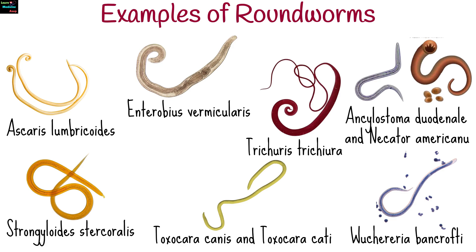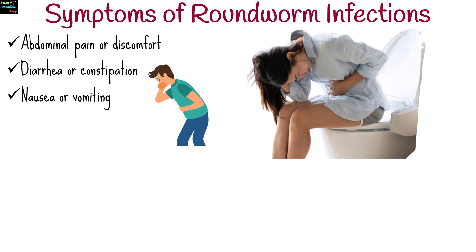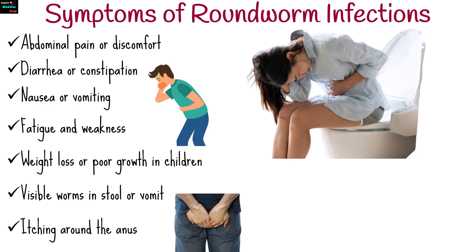Symptoms can vary depending on the type of roundworm and the severity of the infection. Some of the general symptoms include abdominal pain or discomfort, diarrhea or constipation, nausea or vomiting, fatigue and weakness, weight loss or poor growth in children, visible worms in stool or vomit, and itching around the anus, especially in pinworm infections.